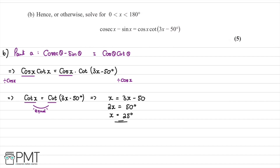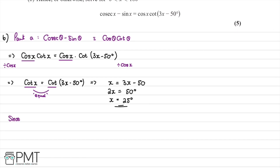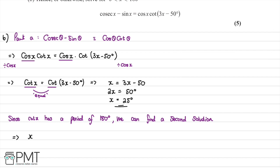Since cot x has a period of 180 degrees, we can find a second solution. To do this, we write x plus 180 equals 3x minus 50, adding 180 due to the period. This gives 2x equals 230, and therefore x equals 115 degrees as our second solution.